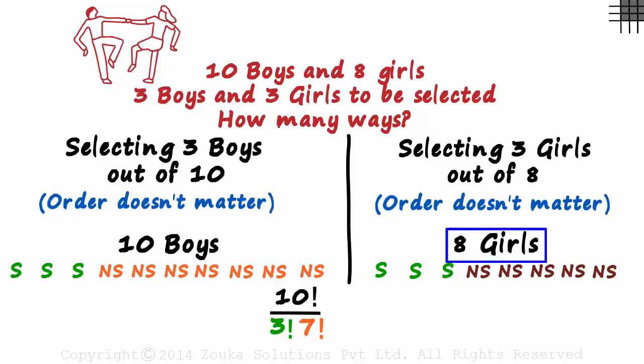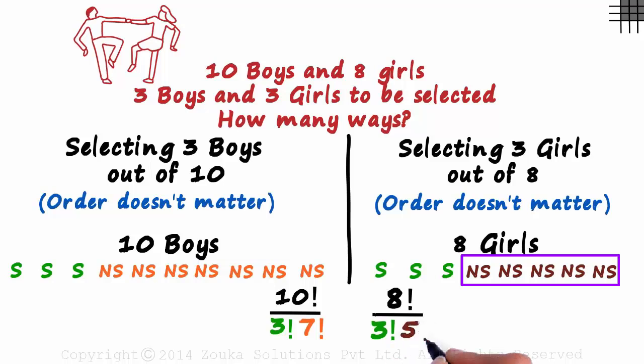As there are 8 girls, we write 8 factorial here. And this includes all possibilities assuming each of the 8 cases are different. But we know that they are not. For this, we divide 8 factorial by 3 factorial, and for this, we divide it by 5 factorial. These many ways in which we can select 3 girls out of 8.